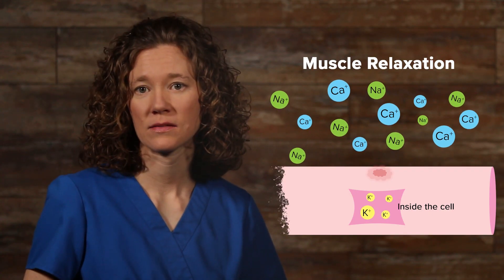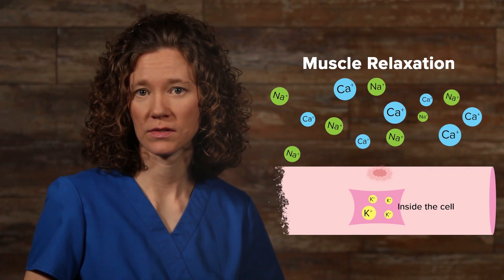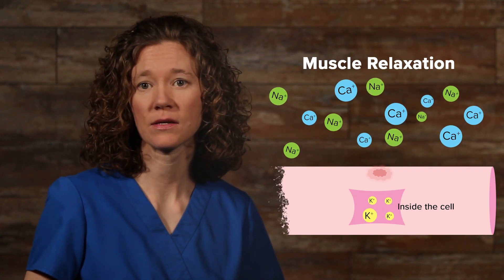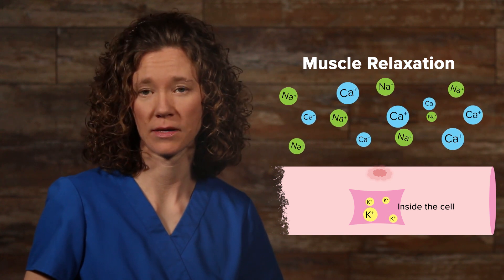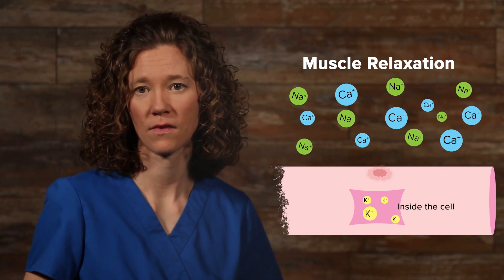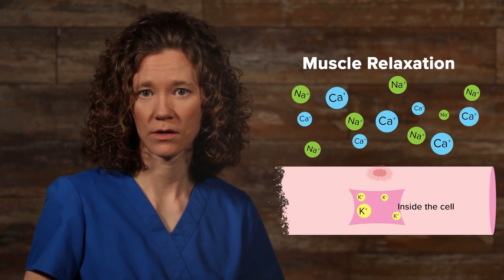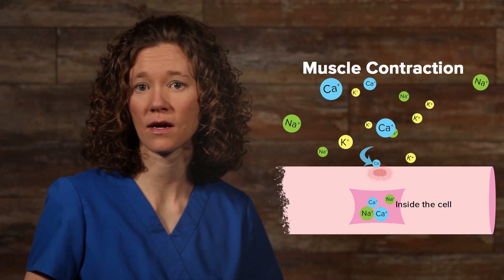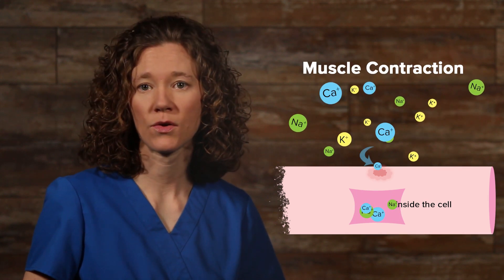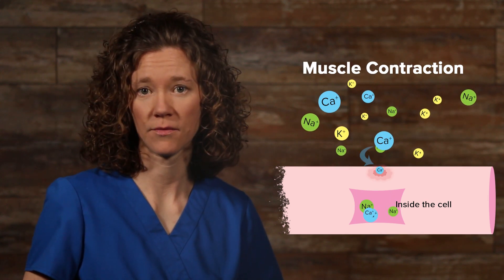When muscles are relaxed, potassium ions are in the muscle cell and calcium and sodium ions are outside the muscle cell. For muscle contraction to occur, the potassium ions leave the cell and sodium and calcium ions enter the cell.